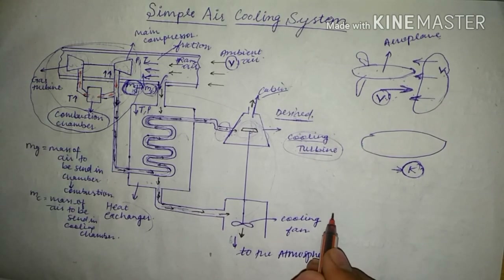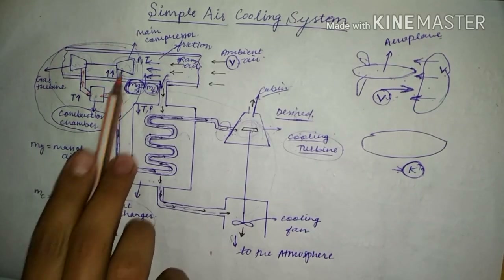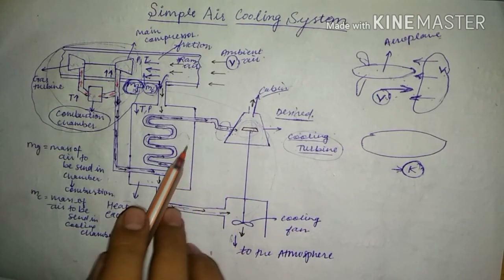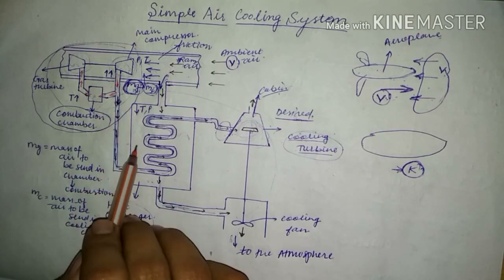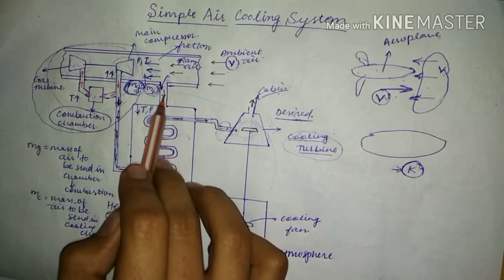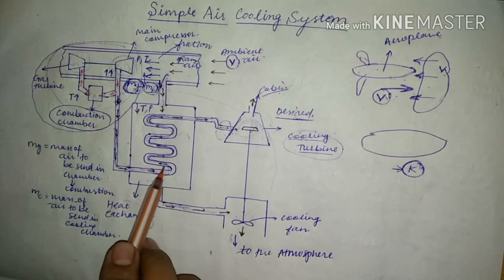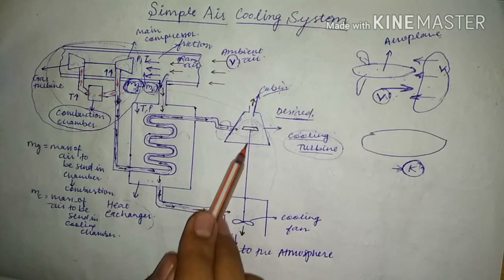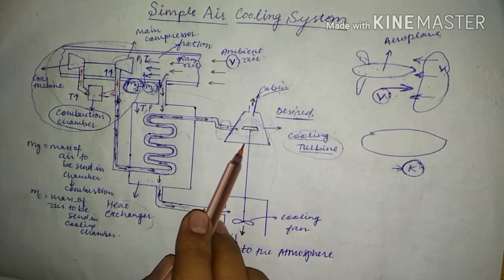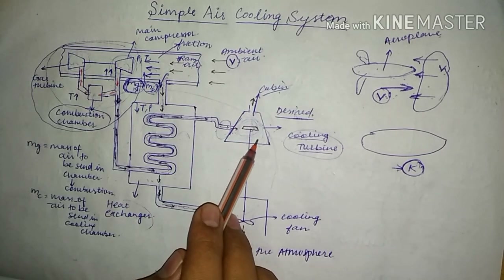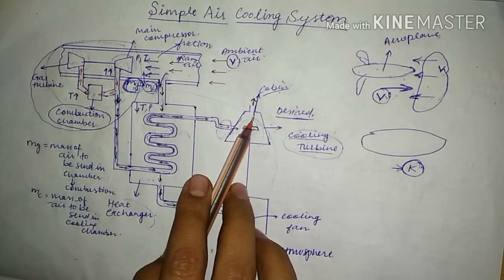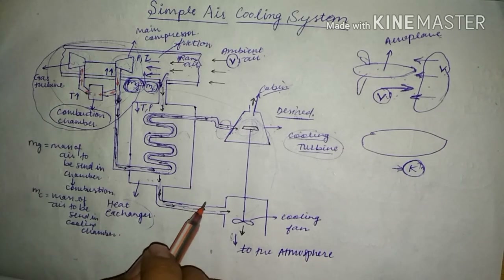The main components of the simple air cooling system are the main compressor, the heat exchanger, and the cooling turbine. Air bled from the main compressor at high temperature and pressure passes through the heat exchanger, where it is cooled by ram air. It then passes through the cooling turbine where it is expanded to the desirable condition, and the cooled air is maintained and sent into the cabin.